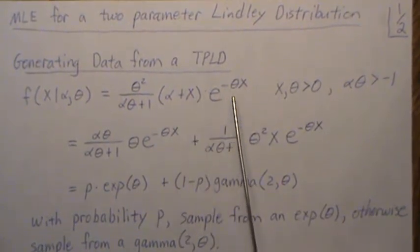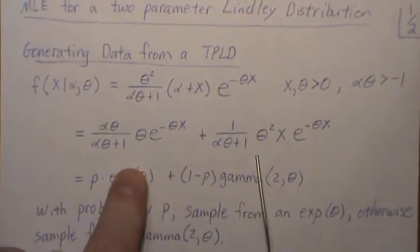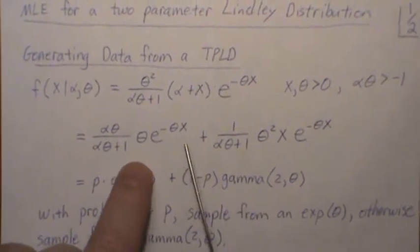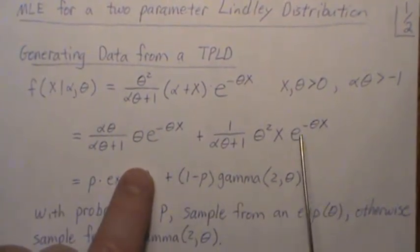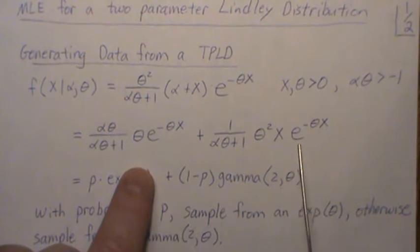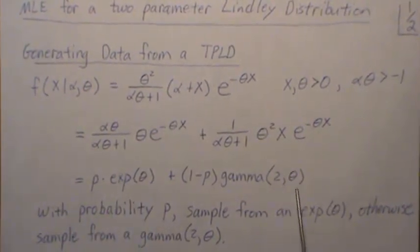Now, to generate data, we rewrite this. If you take that exponential in, you can think of it as two cases here. This piece looks like an exponential distribution, and this piece looks like a gamma distribution, gamma of two and theta.